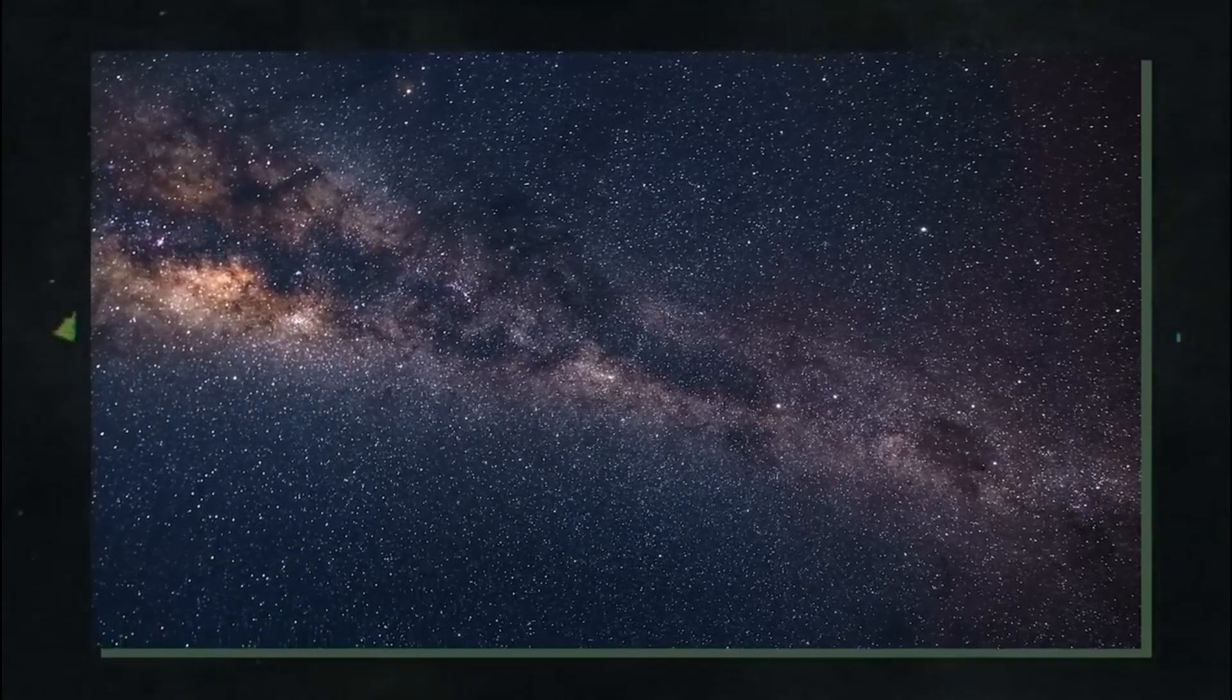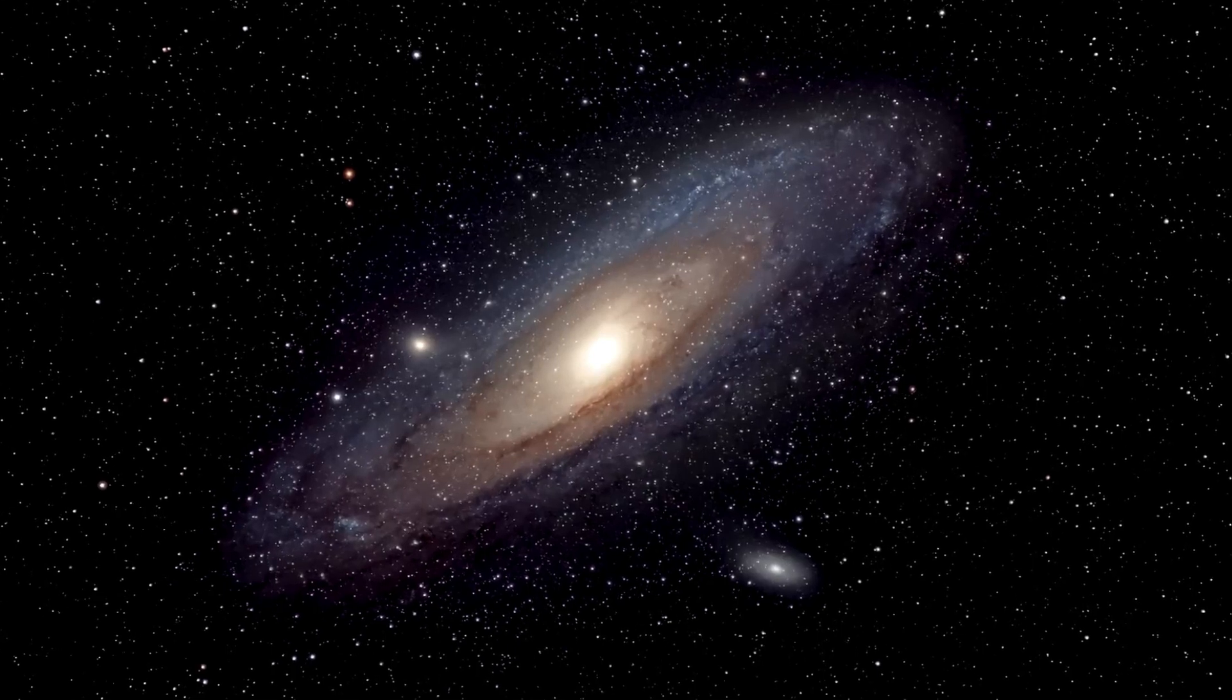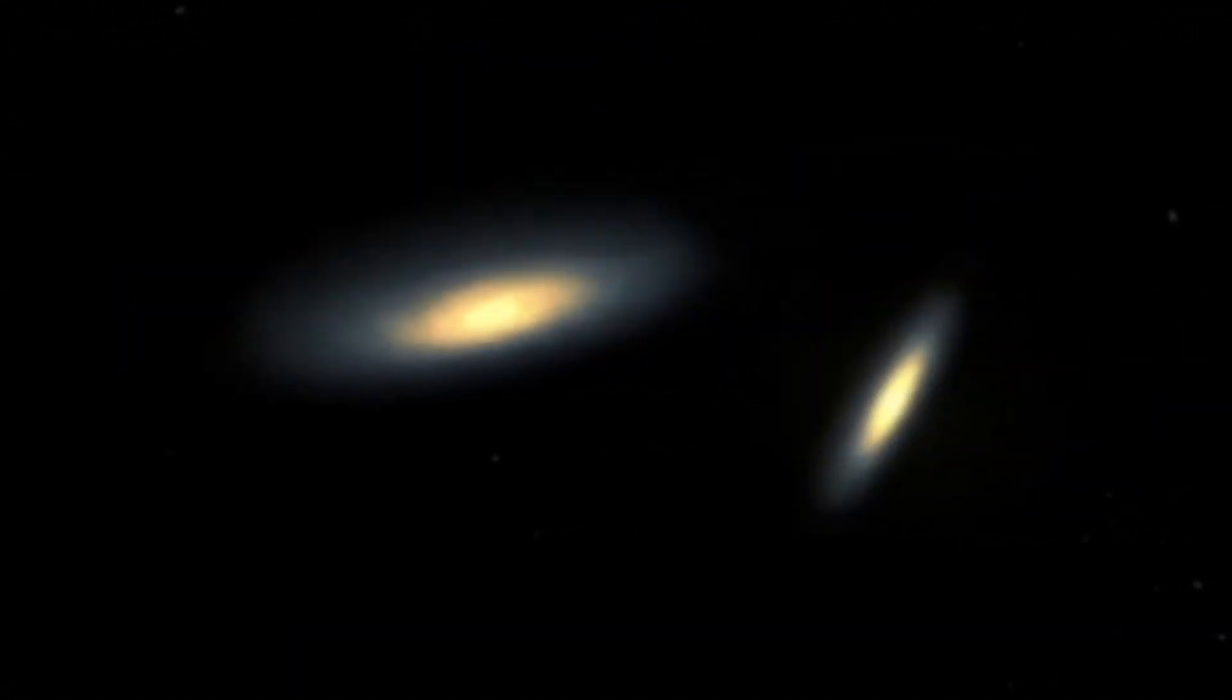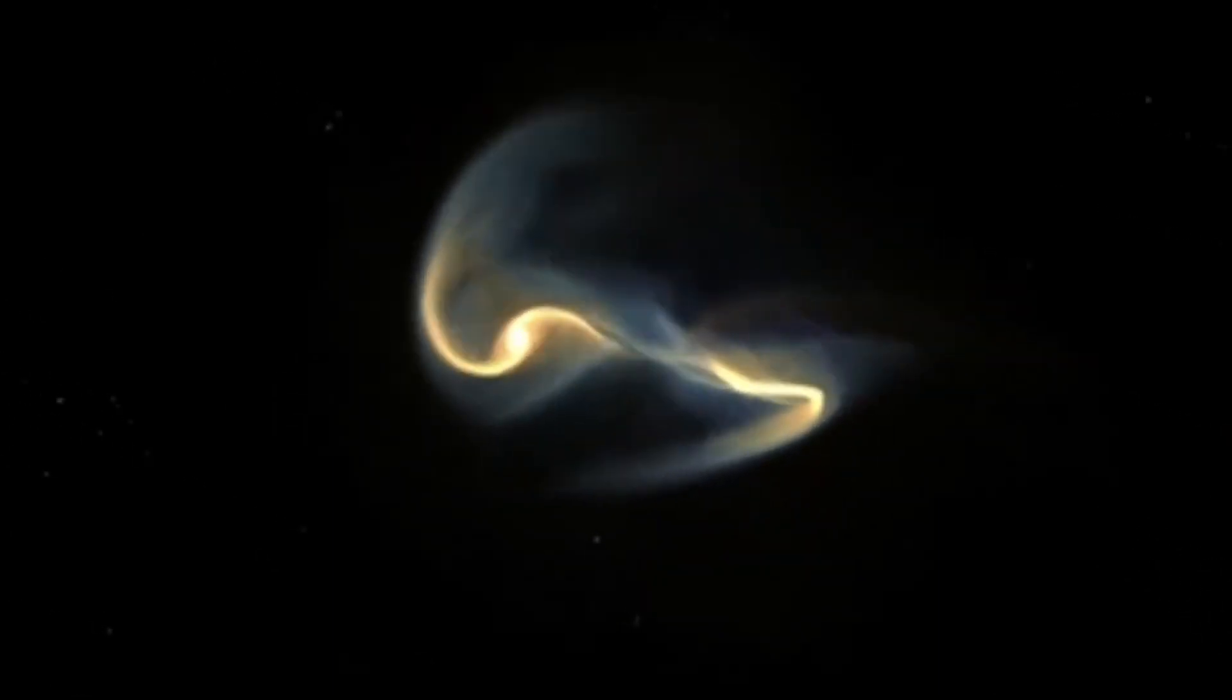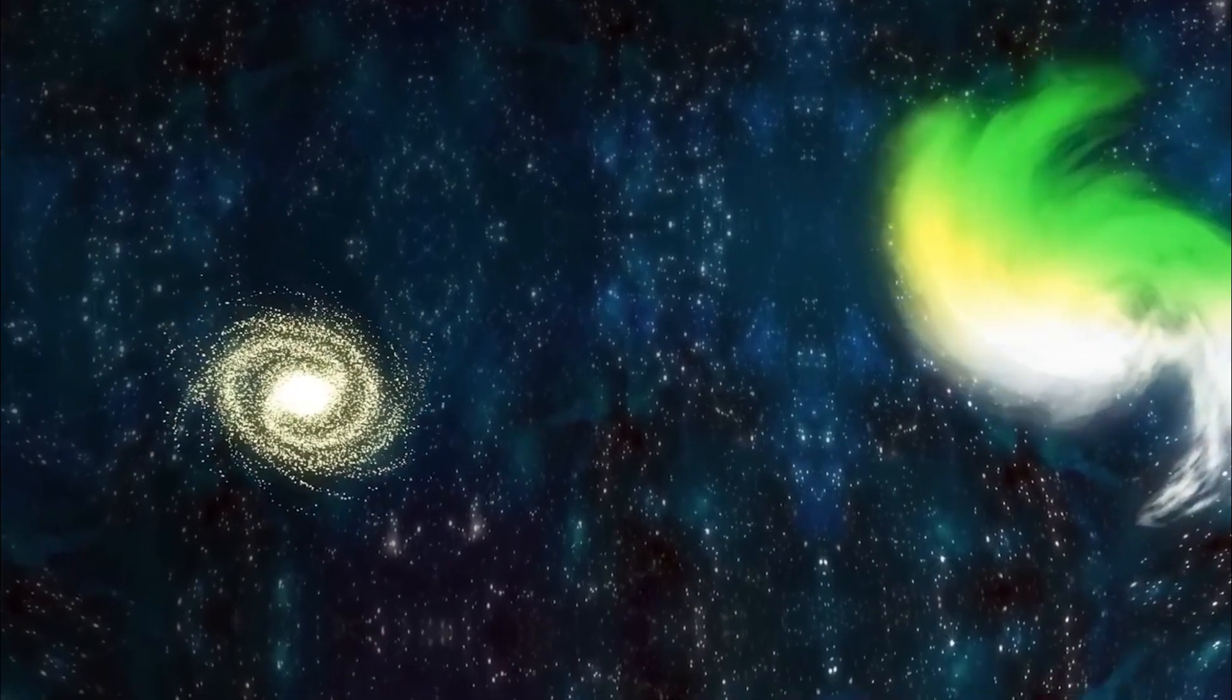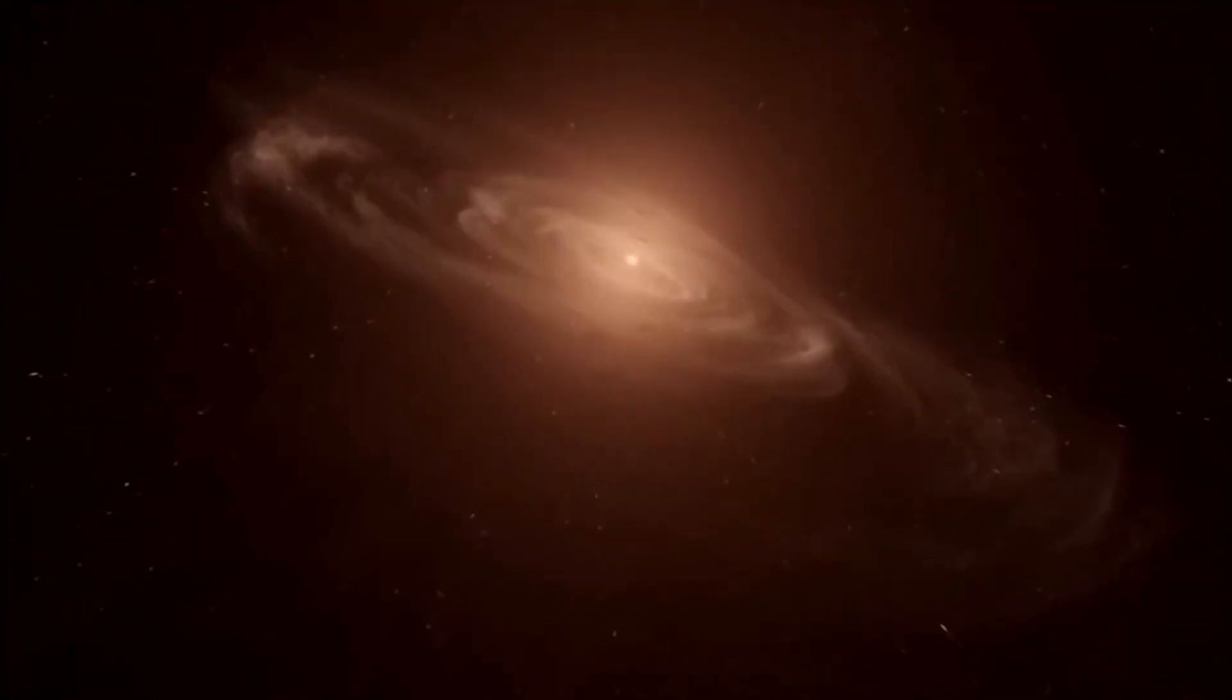The Milky Way and Andromeda are currently 2.5 million light-years distant. The two galaxies are rushing toward one another at 402,000 km per hour, propelled by gravity. The two galaxies will then smash into one another and pass through it, leaving behind gaseous, starry tendrils in their wake.